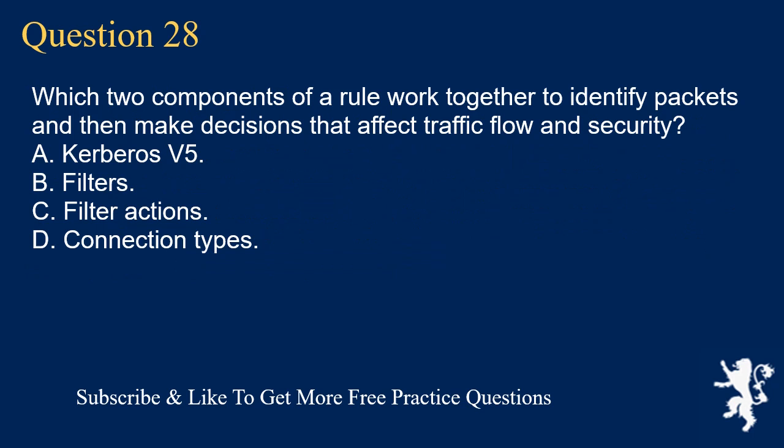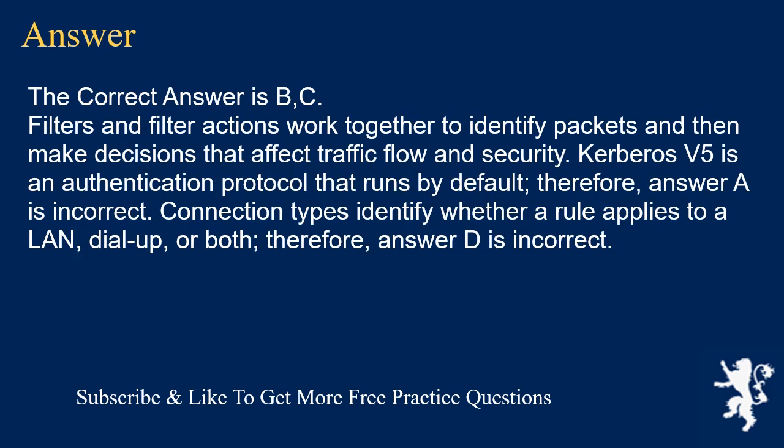Question 28. Which two components of a rule work together to identify packets and then make decisions that affect traffic flow and security? A. Kerberos V5. B. Filters. C. Filter actions. D. Connection types. The correct answers are B and C. Filters and filter actions work together to identify packets and then make decisions that affect traffic flow and security. Kerberos V5 is an authentication protocol that runs by default. Therefore, answer A is incorrect. Connection types identify whether a rule applies to a LAN, dial-up, or both. Therefore, answer D is incorrect.